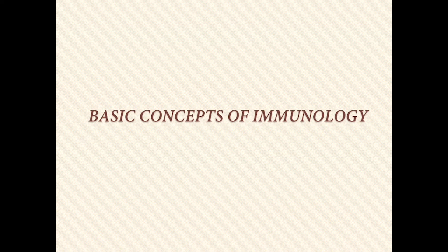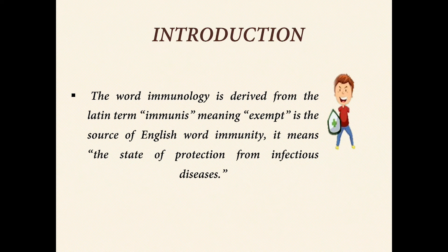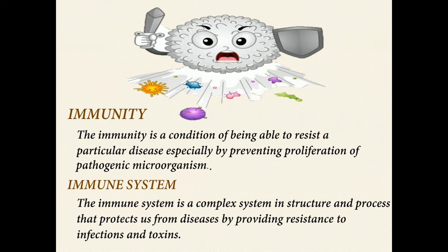Basic concepts of immunology: introduction. The word immunology is derived from the Latin term 'immunis' meaning exempt, which is the source of the English word immunity. Immunity means the state of protection from infectious diseases. The immune system is a complex system in structure and process that protects us from diseases by providing resistance to infections and toxins.